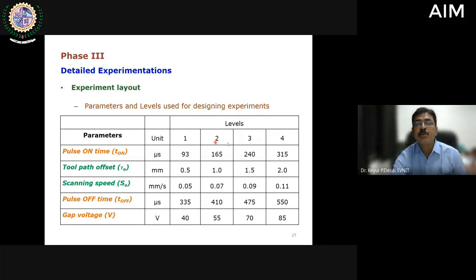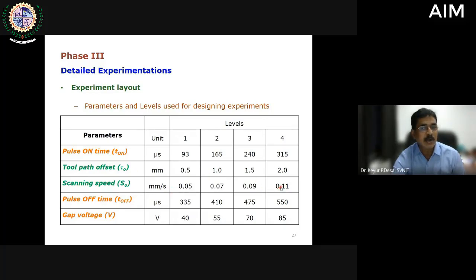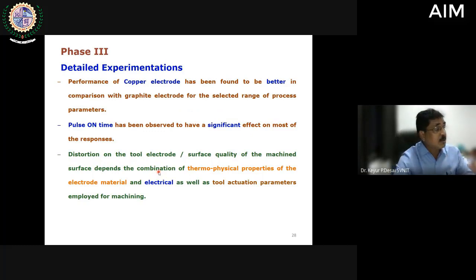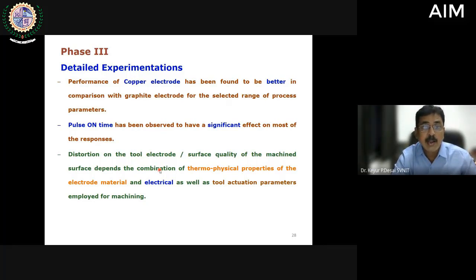For detailed experimentation, the four levels of five parameters selected were: pulse on time varied from 93 to 315 microseconds; toolpath offset varied from 0.5 mm to 2 mm; scanning speed from 0.05 to 0.11 mm/s; pulse off time from 335 to 550 microseconds; and gap voltage from 40 to 85 V. These experiments were performed using a copper electrode, and similar experiments were repeated using a graphite electrode, followed by confirmation tests.